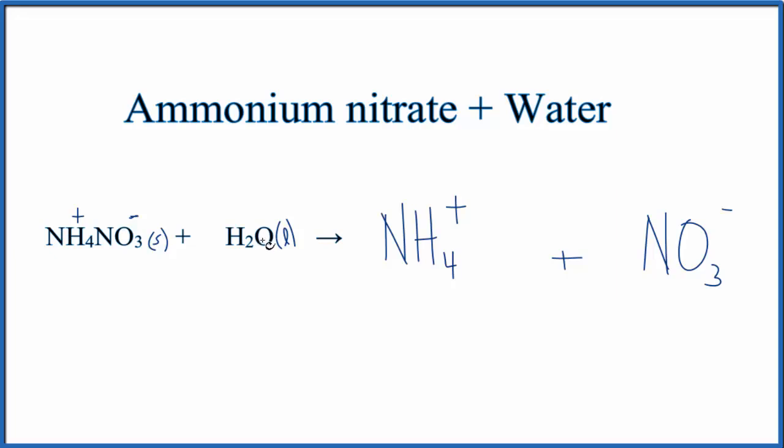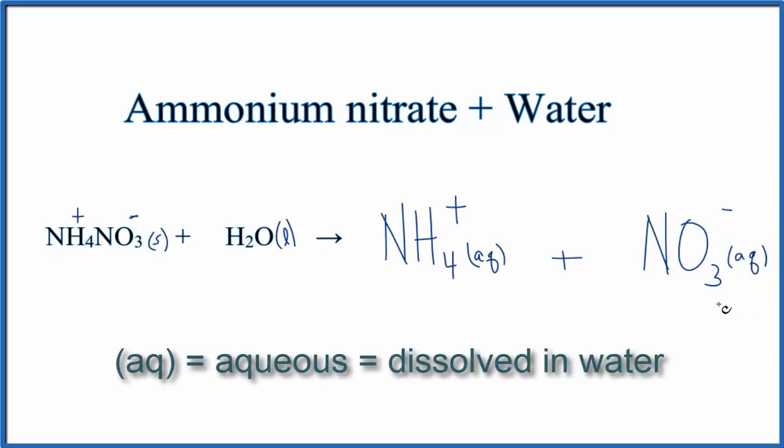Because we put this in water and it's dissolved or dissociated, we can put an aq after each of the ions. And that aq means aqueous or dissolved in water. Because it's aqueous, we don't need to write H2O on this side of the equation.